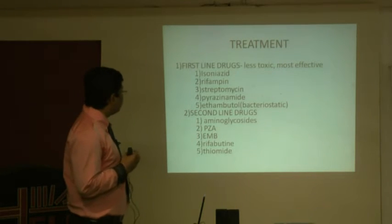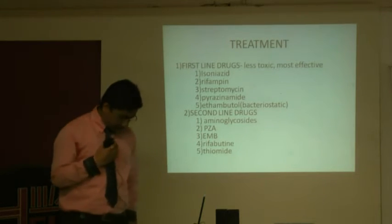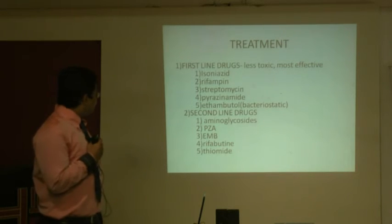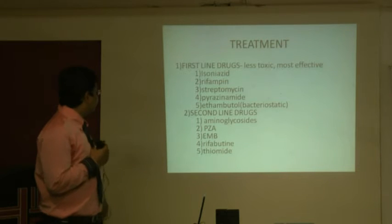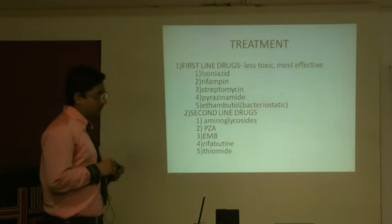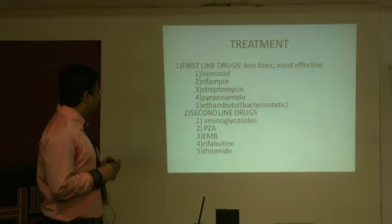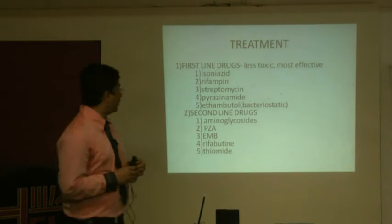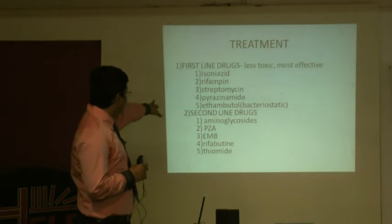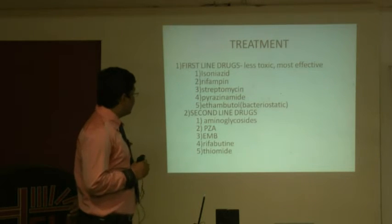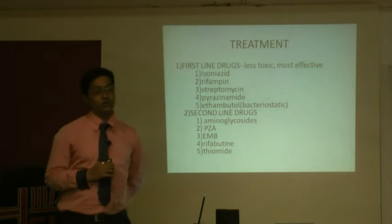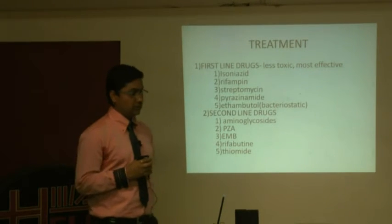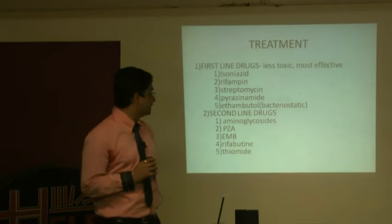The first-line drugs also include pyrazinamide and ethambutol. Out of these five drugs, the first four — isoniazid, rifampicin, streptomycin, and pyrazinamide — are bactericidal, meaning they kill the bacteria and decrease the bacterial load in the human body. The last one, ethambutol, is bacteriostatic — it slows the growth of bacteria. Slow-growing bacteria are the main cause of resistance.